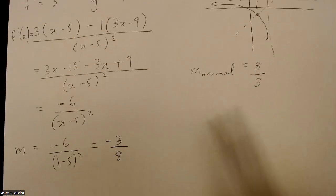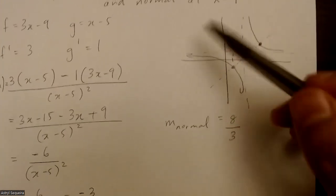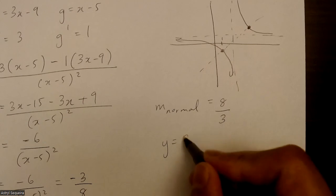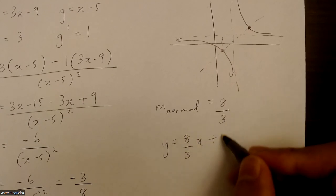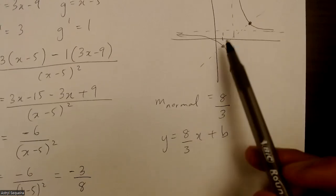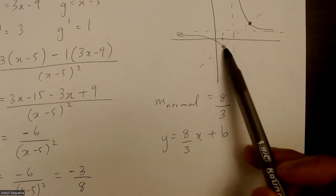Just did the negative reciprocal of this and got this. So now I want to find the equation of this line. So I'm just going to go y equals mx plus b. I know that at this point here, x is 1.